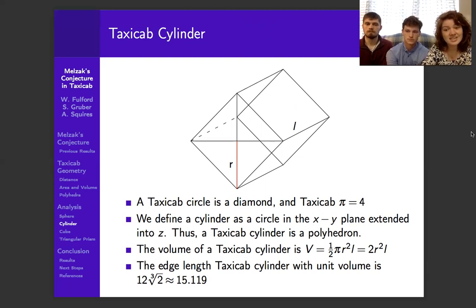We're going to extend it into Z, and after finding the volume formula that appropriately represents this in taxicab space, we find that the least edge length we can find for unit volume is going to be around 15.